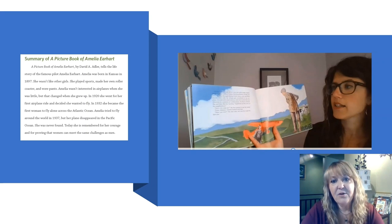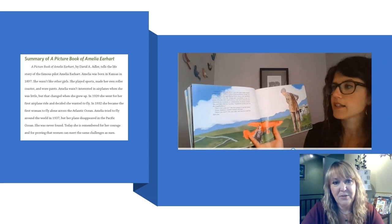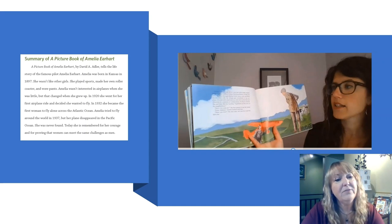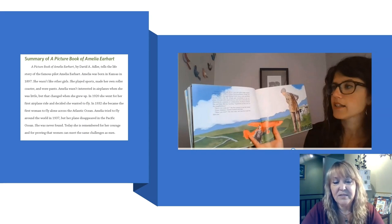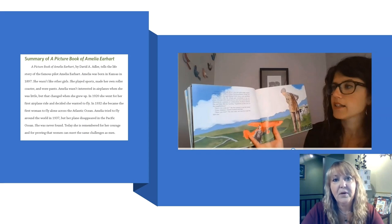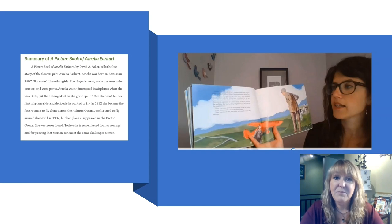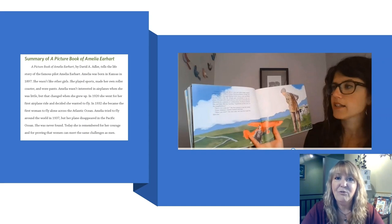For the past couple of weeks, we've been thinking about important ideas and supporting details in a couple of other books — we have Flight, which was the story about Charles Lindbergh, and a picture book of Amelia Earhart. We know that determining important ideas and supporting details are really important comprehension strategies because they help us to think about what are the most important parts of a book that we want to remember. We also know that summarizing depends on being able to identify the most important ideas, and that we need those in order to build a summary.